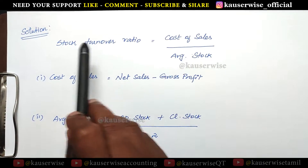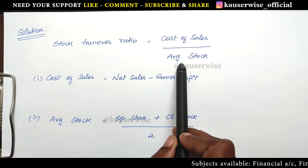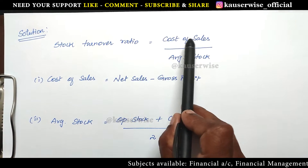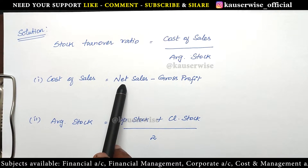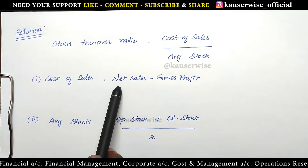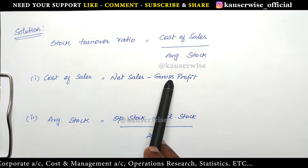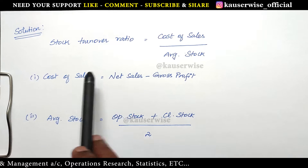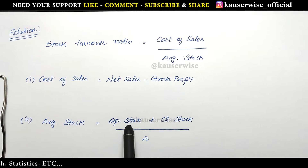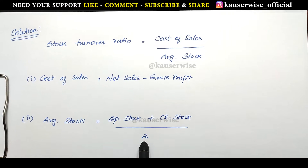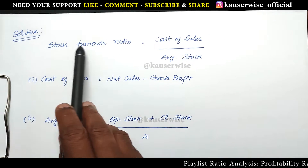This is the formula to find out stock turnover ratio. The formula is cost of sales divided by average stock. What is the formula for cost of sales? Net sales minus gross profit. Net sales means in case of any sales return, just subtract returns from sales in order to find out the net sales. After finding net sales minus gross profit, you will be getting cost of sales. The formula for average stock is opening stock plus closing stock divided by 2. After finding these two elements, you can substitute this formula to find out the stock turnover ratio.